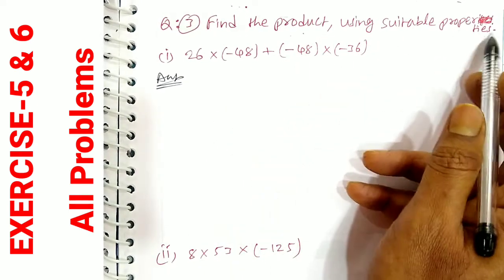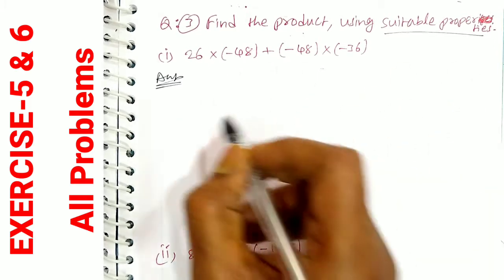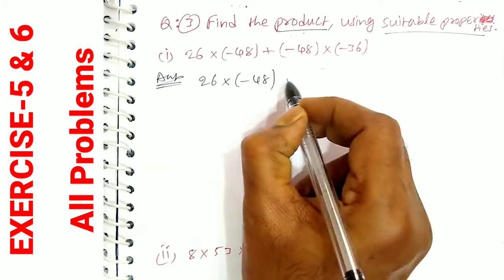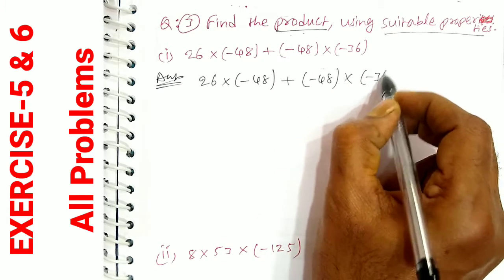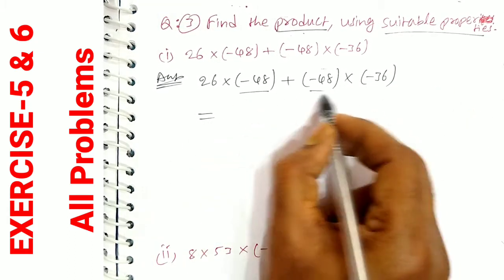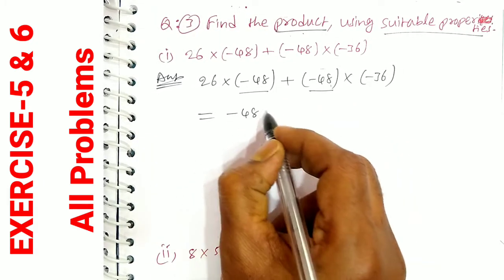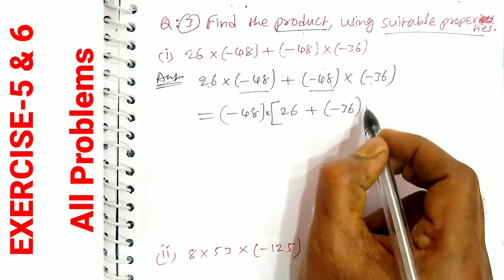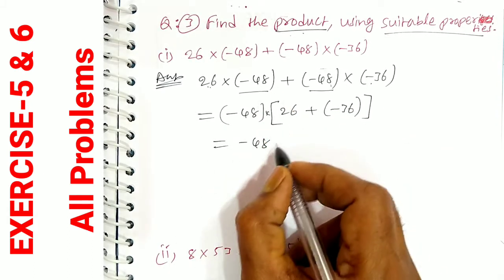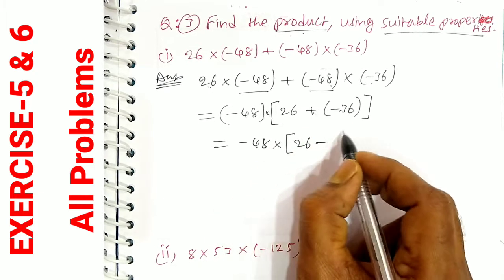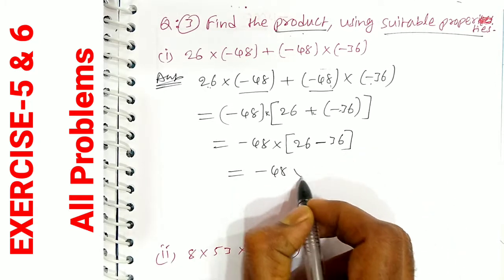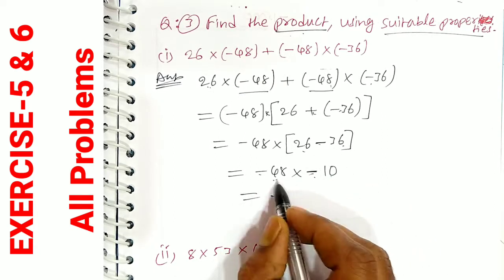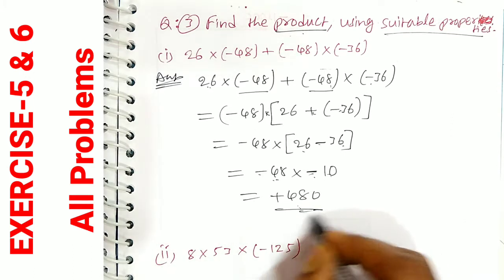Question number 3: find the product using suitable properties. First: 26 into minus 48 plus minus 48 into minus 36. Here, minus 48 is common. Taking minus 48 as common: minus 48 into 26 plus minus 36. 26 plus minus 36 is 26 minus 36, which equals minus 10. So minus 48 into minus 10: minus into minus is plus, giving 48 into 10 equals 480. This is the answer.